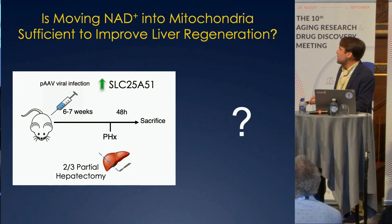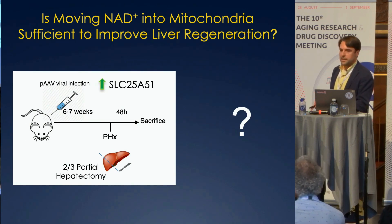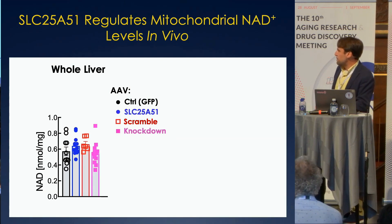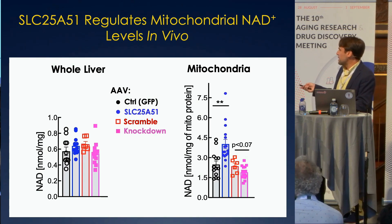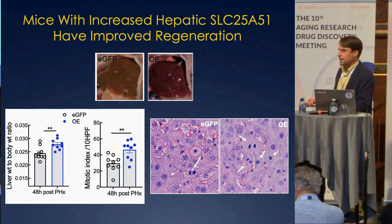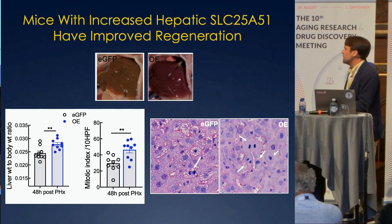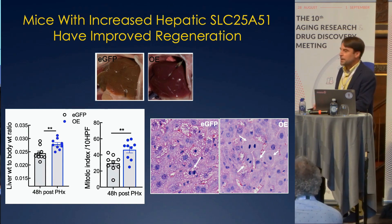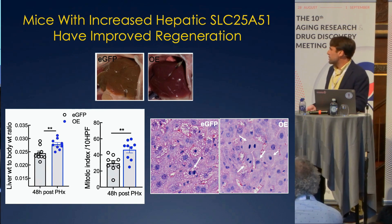This is the experiment we set up to test the hypothesis. We used viral overexpression of SLC25A51 in the livers of mice, and then without adding any supplementation — just shifting their endogenous NAD into the mitochondria — asked whether that would promote regeneration the same way that NAD supplements do. We don't really affect whole liver NAD, but mitochondrial NAD isolated from hepatocytes is significantly higher in the transduced animals. Just shifting NAD into the mitochondria without adding any more to the system is sufficient to completely recapitulate the benefit we see with nicotinamide riboside: liver weight to body weight ratio, the mitotic index, and histologically it looks just like the effects from nicotinamide riboside supplementation.